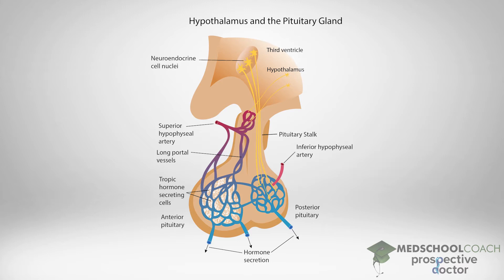There is also the hypothalamus-posterior pituitary axis. In this system, the hypothalamic neurons produce and secrete hormones and send their axon projections through the posterior pituitary gland. The posterior pituitary gland is essentially an extension of the hypothalamus, and here the hypothalamic neurons release the hormones directly into the bloodstream.